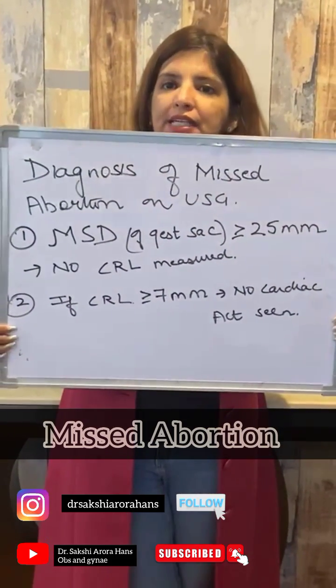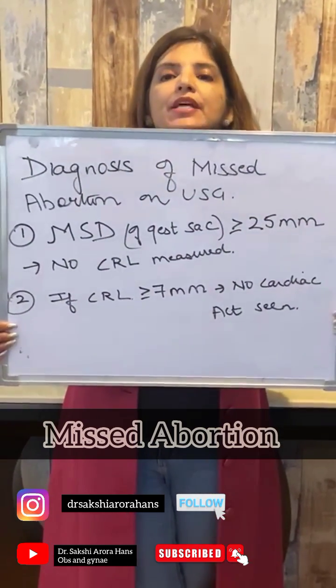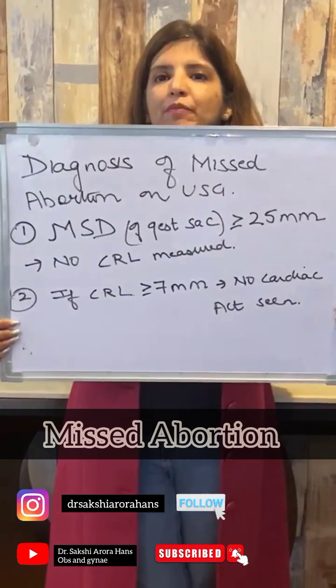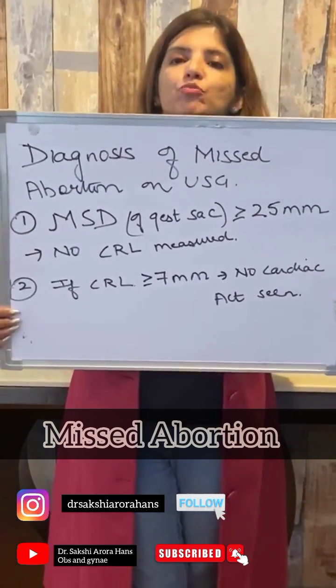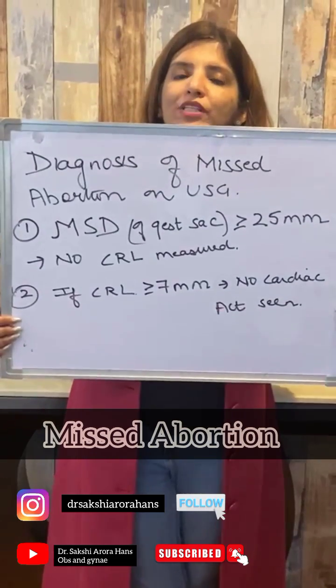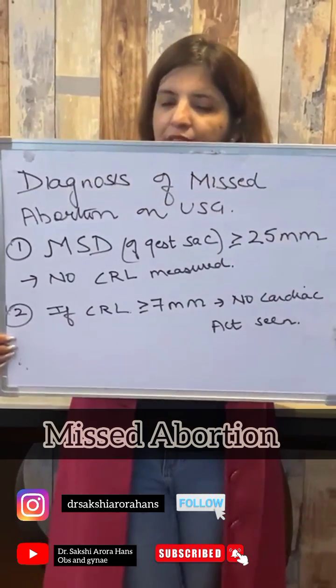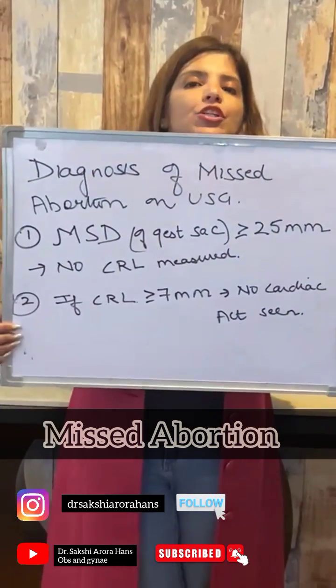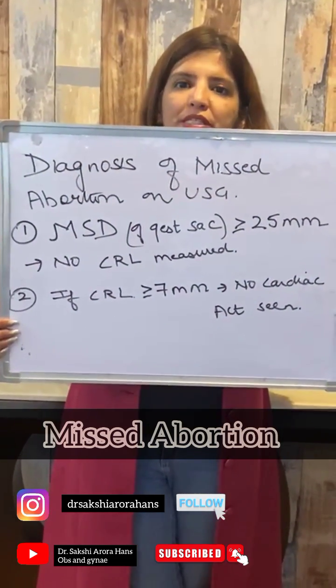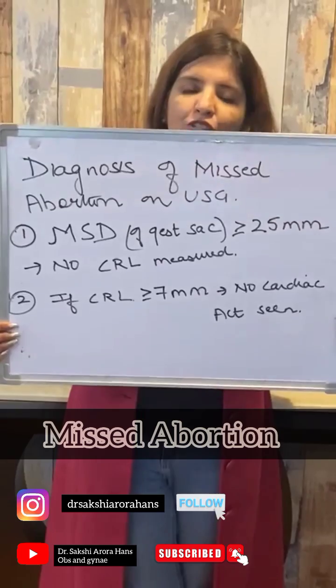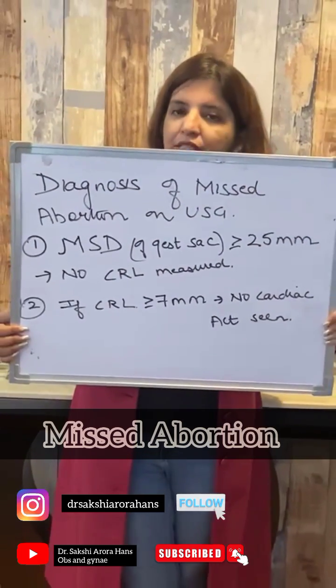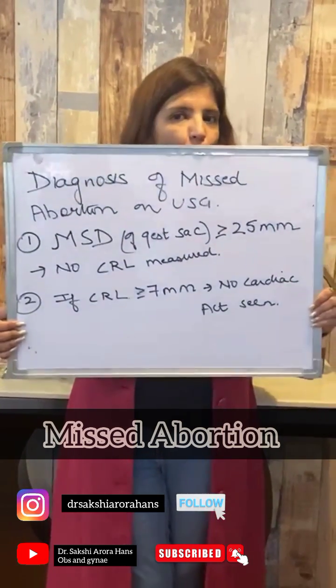If you are getting a mean sac diameter — the mean sac diameter is the diameter of the gestational sac — if it is more than or equal to 25 mm and the fetal pole cannot be seen, that is, crown-rump length cannot be measured, then that means it is a case of missed abortion.